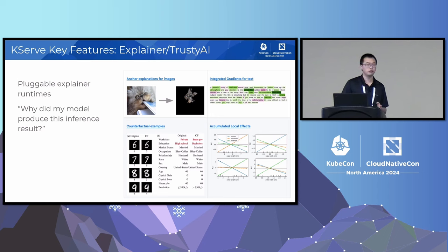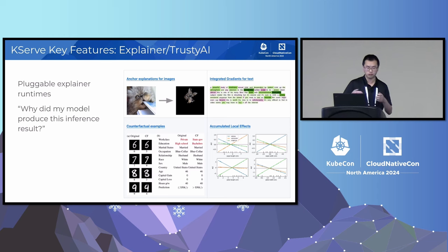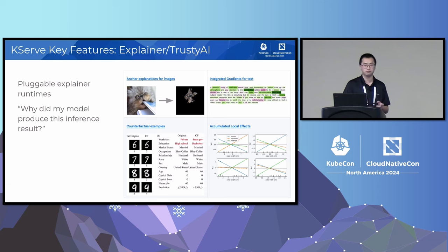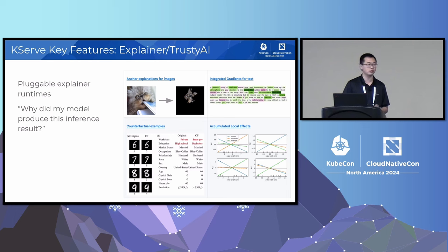Another feature is the explainer or TrustyAI integration. KServe provides a way to plug in any explainer runtime. If your models are complex and act as a black box, you can use explainability to understand what features are contributing to model performance and why the model produces a given inference result. TrustyAI also supports features like LLM evaluation and guardrail capabilities.